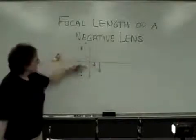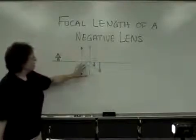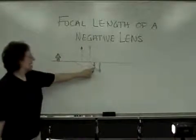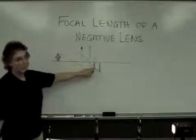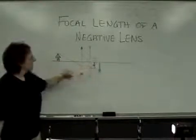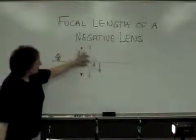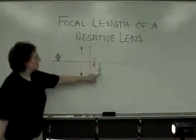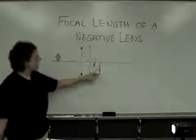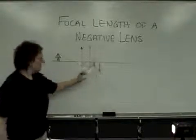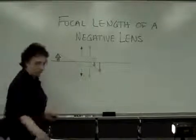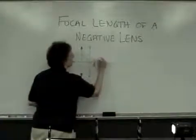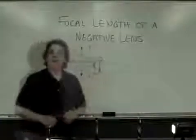If the negative lens is inserted between the positive lens and the image that the lens forms, that causes the rays to diverge a bit before they again converge and form the image. In other words, it takes the original image and moves it outward so that it forms in a new position.